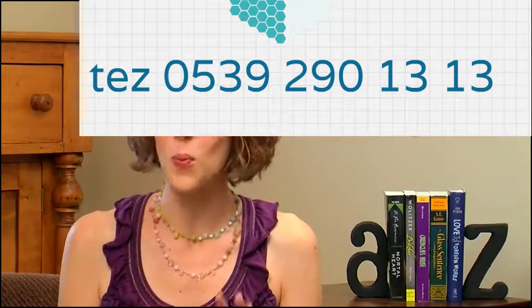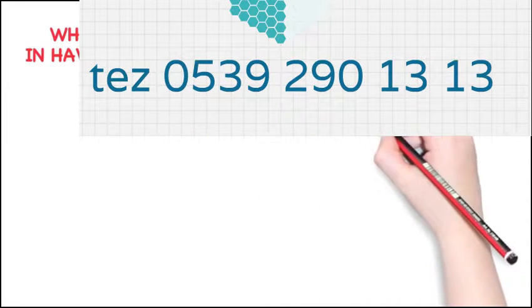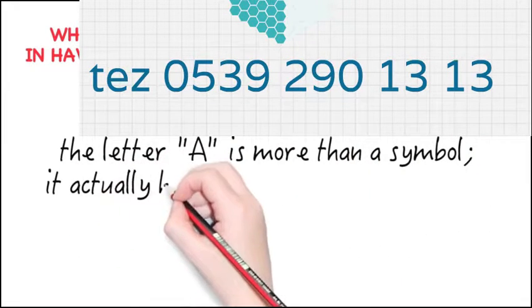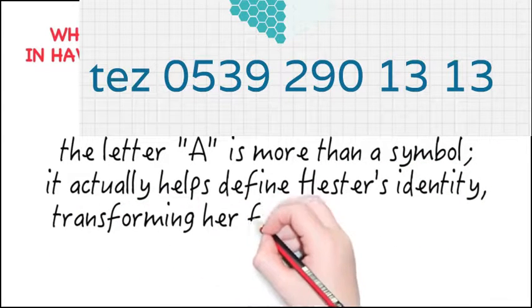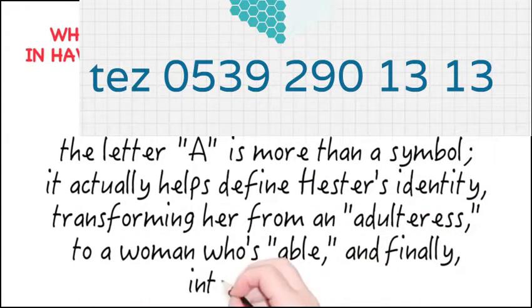So, with these examples in mind, let's revise that thesis statement one more time. What role does the Scarlet Letter A play in Hawthorne's novel, and why is it important? Finalized thesis, version 1: In the Scarlet Letter, the letter A is more than a symbol. It actually helps define Hester's identity, transforming her from an adulteress to a woman who's able, and finally into an angel.